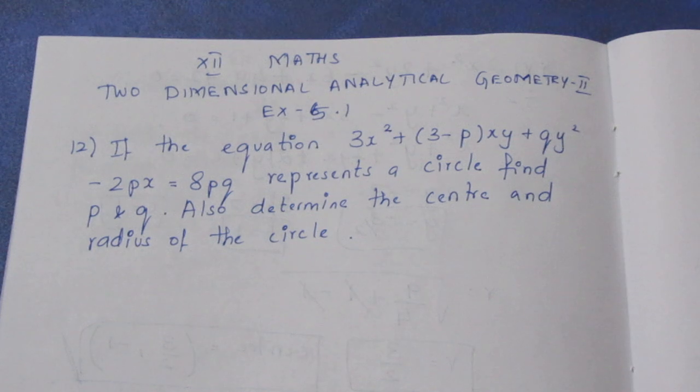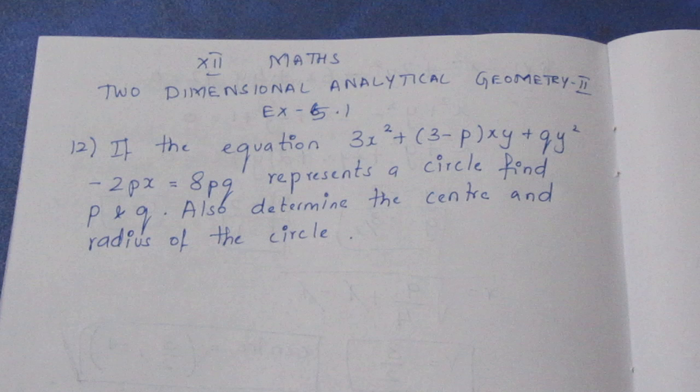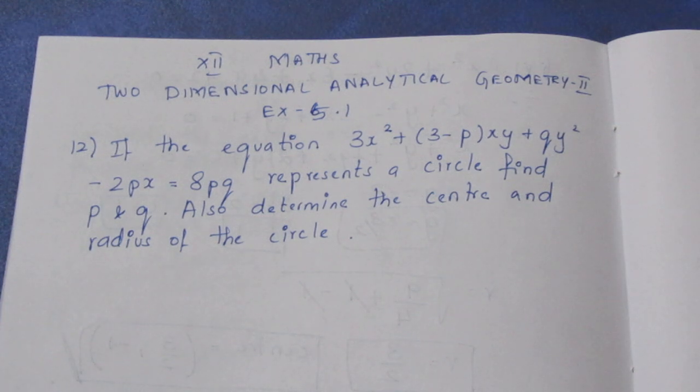Question: If the equation 3x² + (3-p)xy + qy² - 2px = 8pq represents a circle, find p and q. Also determine the center and radius of the circle.